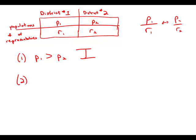Now forget statement number one, block it out of your head, focus only on statement number two. Statement number two says that the number of representatives in district 2 is greater than the number of representatives in district 1. Well now we know nothing about the populations and because we know nothing about the populations we can't figure out anything about the ratios. So this statement is insufficient.